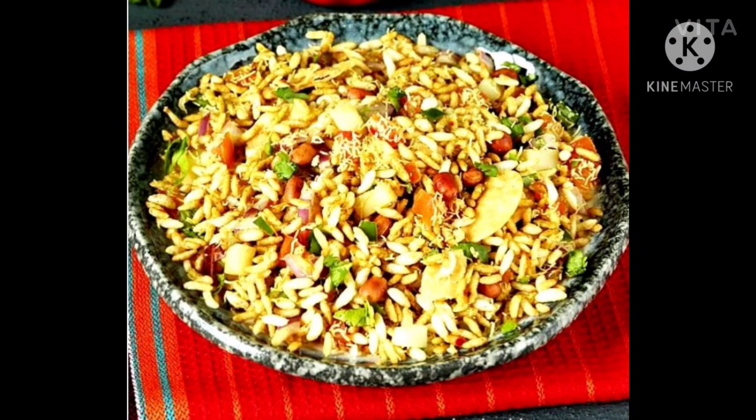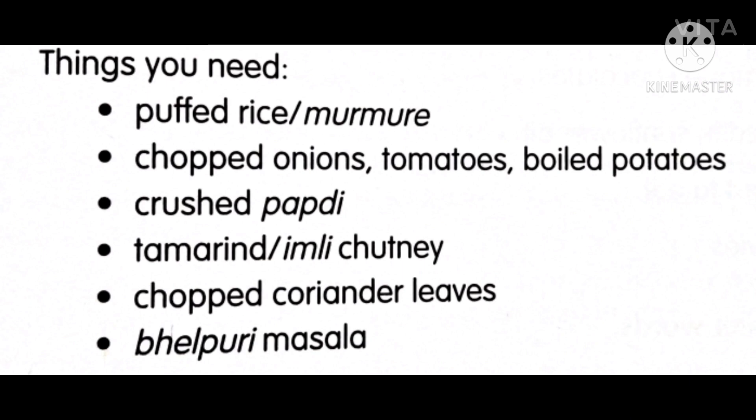Let us see the ingredients required to prepare bhel puri. We need puffed rice — called murmuri in Hindi, or bhel. We also need chopped onions, tomatoes, boiled potatoes, crushed papad, tamarind or imli chutney, chopped coriander leaves, and bhel puri masala. These are the ingredients required to prepare bhel puri.